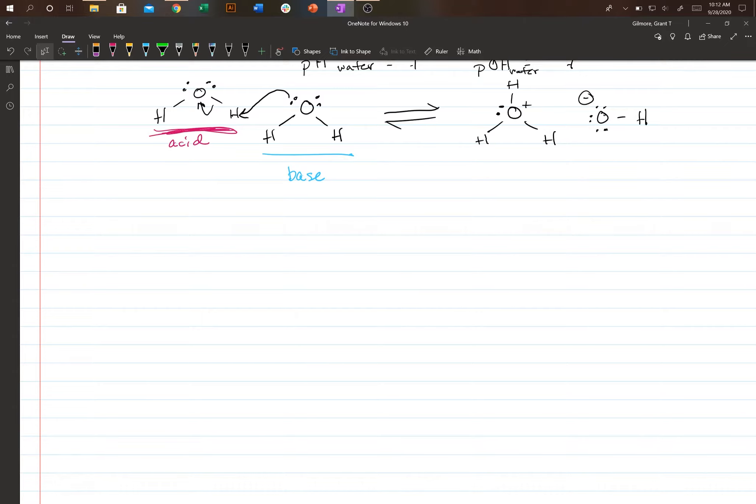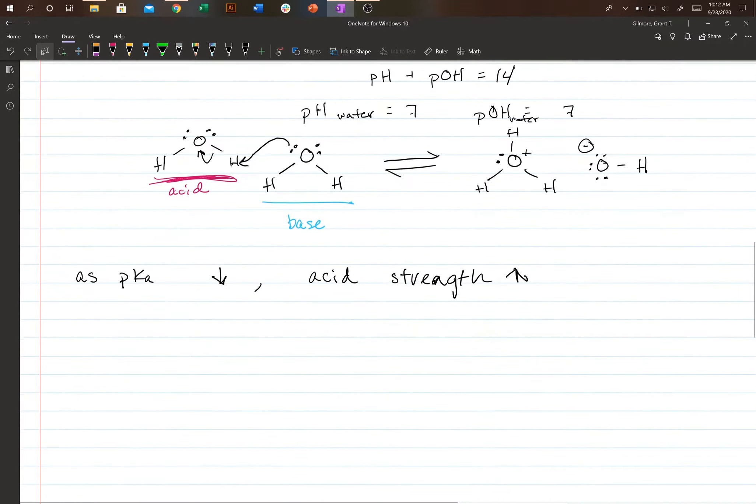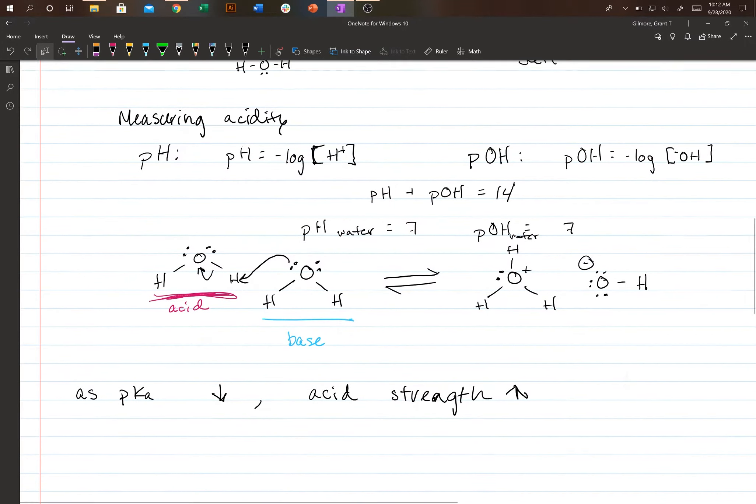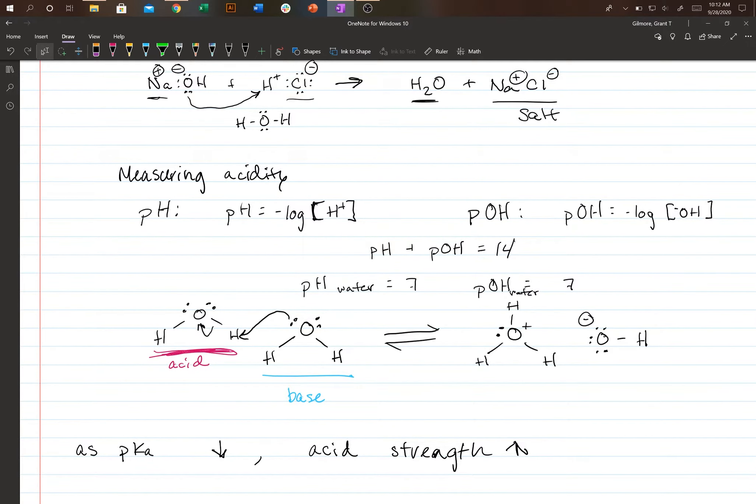You can also measure the strength of an acid with something called pKa. Now, Ka is the dissociation constant of an acid. And so pKa, the lower your pKa value is, so as pKa decreases, acid strength increases. All right. So I should mention, going back to this, I mentioned it, but to further illustrate...